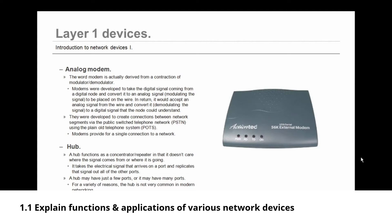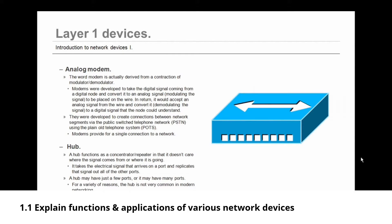Modems provide for a single connection to a network and they're only concerned about the wire. The wire resides on the physical layer — layer one of the OSI model. It doesn't care where the signal comes from; it just does its job. Then there's the hub. A hub functions as a concentrator or repeater in that it doesn't care where the signal comes from or where it is going.